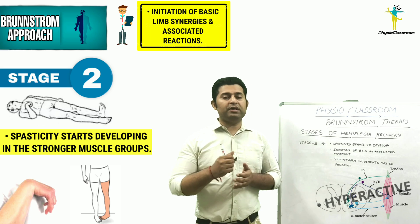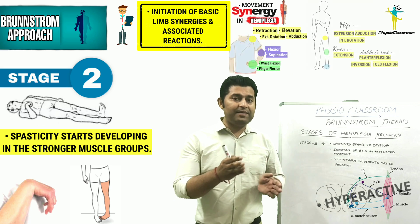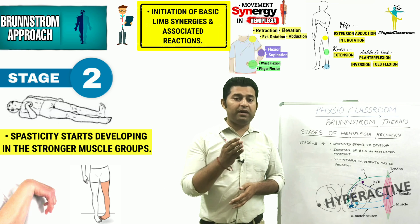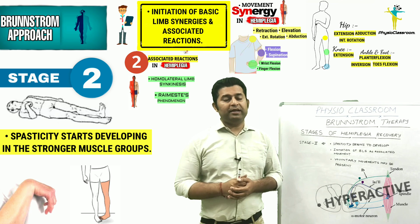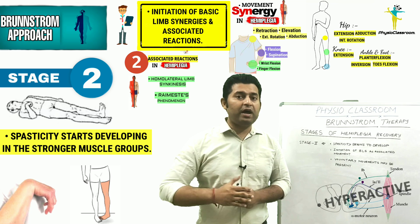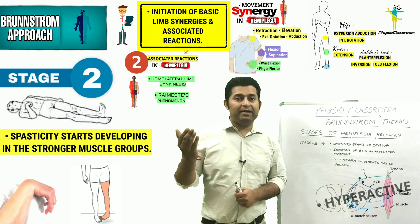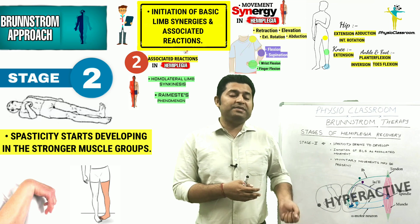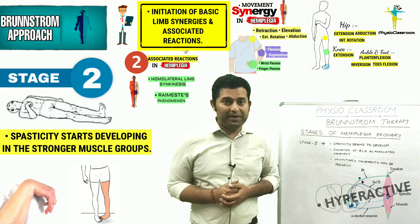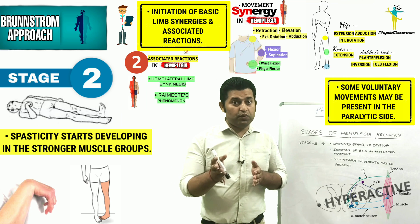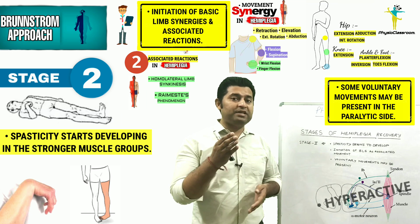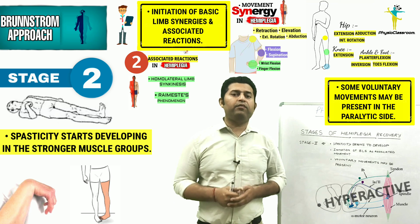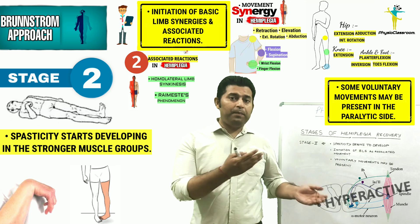The second key feature of Stage 2 is that the basic limb synergies start getting initiated as associated reactions, meaning that when the hemiplegic patient puts extra effort from the normal side, there is reflexive stimulation of basic limb synergies in the hemiplegic side. A third key feature is that some hemiplegic patients at this stage can also exhibit some voluntary movements in the paralytic side.